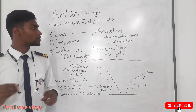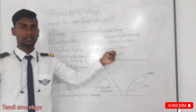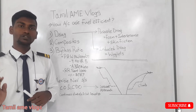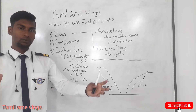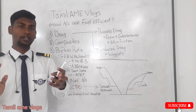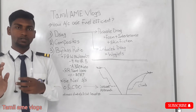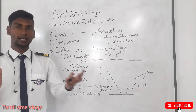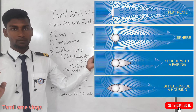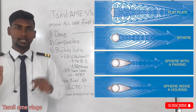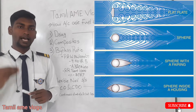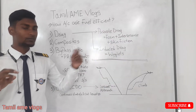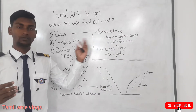Parasite drag is divided into form drag, interference drag, and skin friction drag. Form drag: if you are traveling in a vehicle and expose your hand to an airstream, your hand will be pushed back due to the resistance of air, because you are exposing a high surface area to the air. To reduce form drag, we need to reduce the exposure area to the air. That is why the aircraft's nose is pointed — sharper — to reduce form drag.